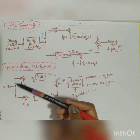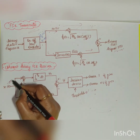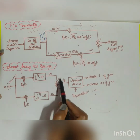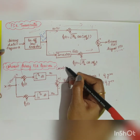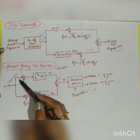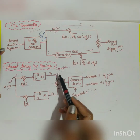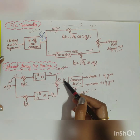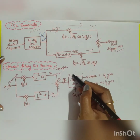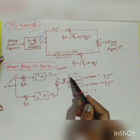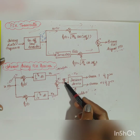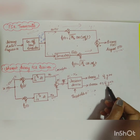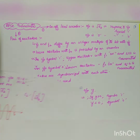At the receiver, the received signal x(t) = s(t) + w(t), where w(t) is channel noise. This signal is fed into two correlators synchronized with the transmitter, each consisting of a multiplier and integrator. The correlator outputs are x_1 and x_2. These are subtracted to give y = x_1 − x_2, which is compared against a zero threshold: if y > 0, symbol 1 is decided; if y < 0, symbol 0 is decided.